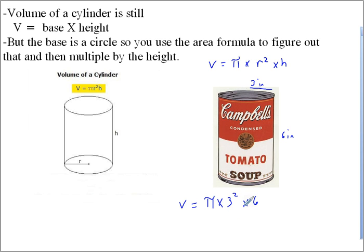And when I do that all, I end up with, well, I can write this out in terms of pi. So this is going to be pi times 9 times 6. That's going to be equal to 54 times pi.